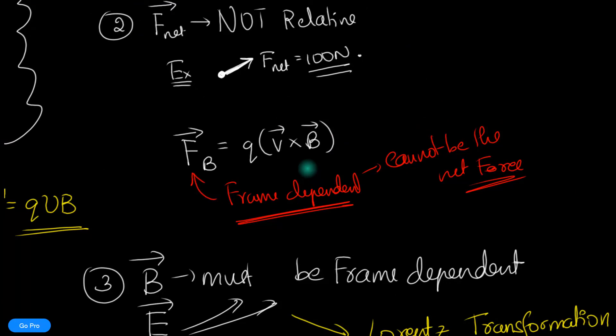So it's amazing that a simple formula — that the magnetic force is Q times V cross B — has actually changed the way we think about space, time, and the nature of reality. Stay tuned for more.